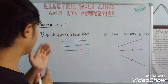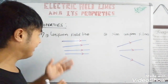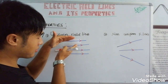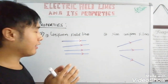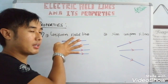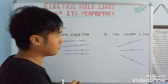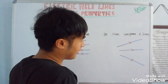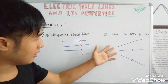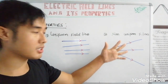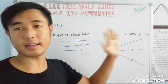Property number seven: uniform and non-uniform field lines. When electric field lines are parallel to each other, equally spaced, and going in the same direction, they are uniform field lines — meaning direction and magnitude are equal and same at every point. Non-uniform field lines have different directions and different magnitudes at different points.